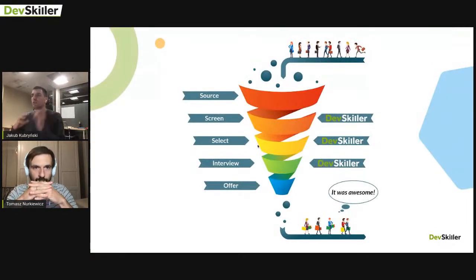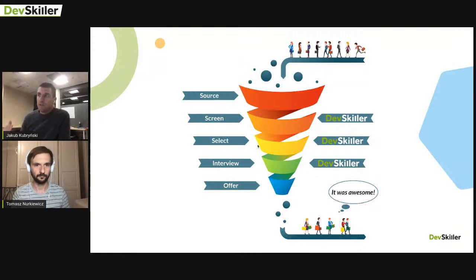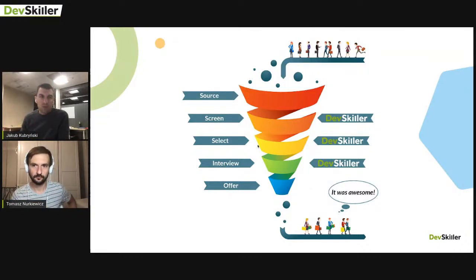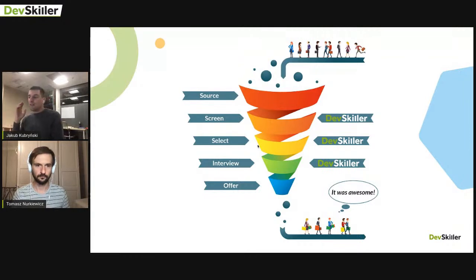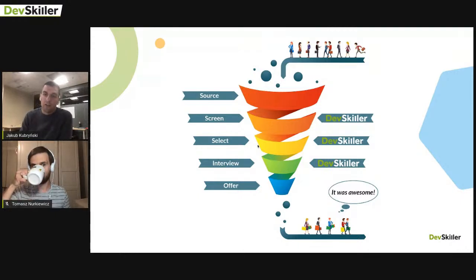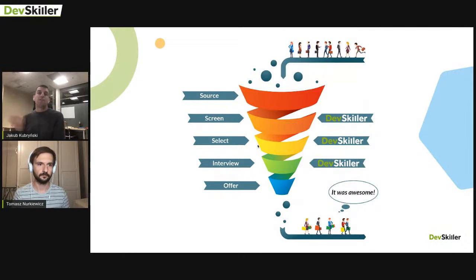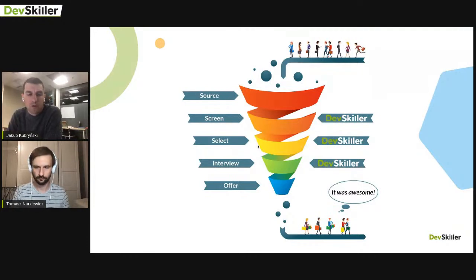The recruitment process is very simple: source candidates, screen them, select the best ones, interview them, and offer the job. The problem is that when screening generates hundreds of candidates, the funnel slows down. The most important stages are screening and selection. When building a development team at Allegro, I used phone calls for screening — 10 to 15 minutes per candidate, verifying salary expectations, notice period, and around 10 simple programming questions.